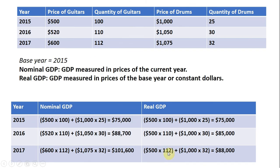In 2016, we're still using the price of guitars in 2015 and the price of drums in 2015, multiplied by the output in 2016. So $500 times 110 plus $1,000 times 30 gives us real GDP in 2016. What we're trying to do is hold prices constant to see what's happening to output — are we actually producing more? And as you can see here, real GDP increased, so this economy has experienced some economic growth. We look at real GDP to determine economic growth.